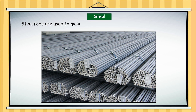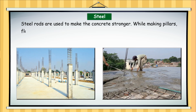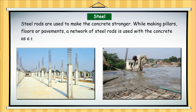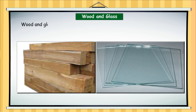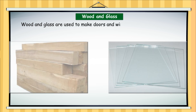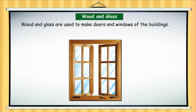Steel rods are used to make the concrete stronger. While making pillars, floors or pavements, a network of steel rods is used with the concrete as a support. Wood and glass are used to make doors and windows of the buildings. Glass is also used for internal partitions in the buildings.